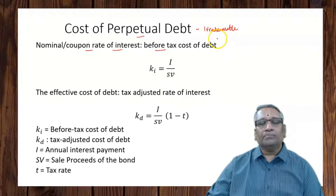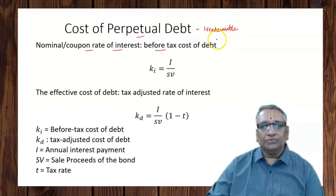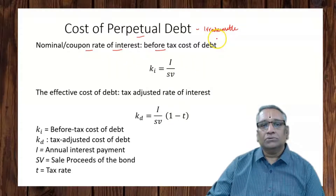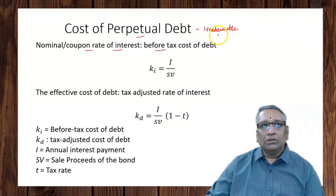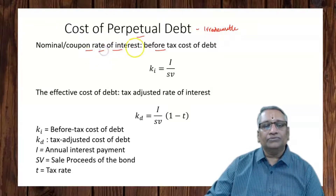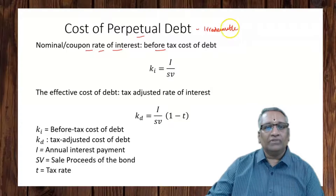Redeemable means the principal amount is to be repaid after the committed time period. When a firm has raised its capital by issue of debentures for 5 or 7 years, the principal amount is to be redeemed after 5 or 7 years, along with the committed coupon rate of interest paid on a year-on-year basis. But for perpetual debt, the principal amount will not be redeemed.